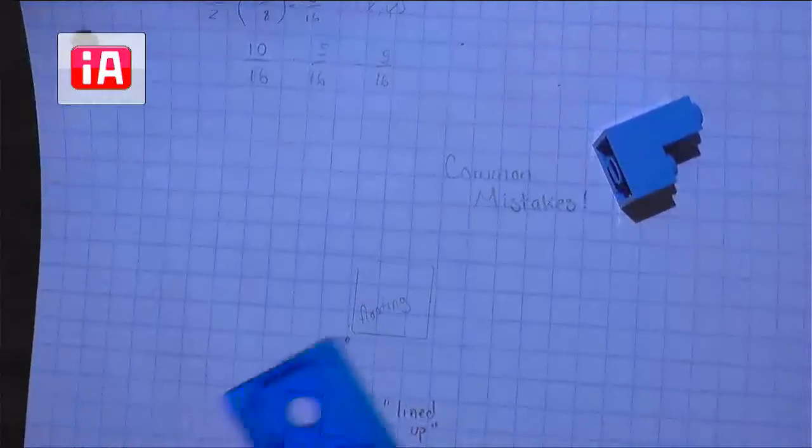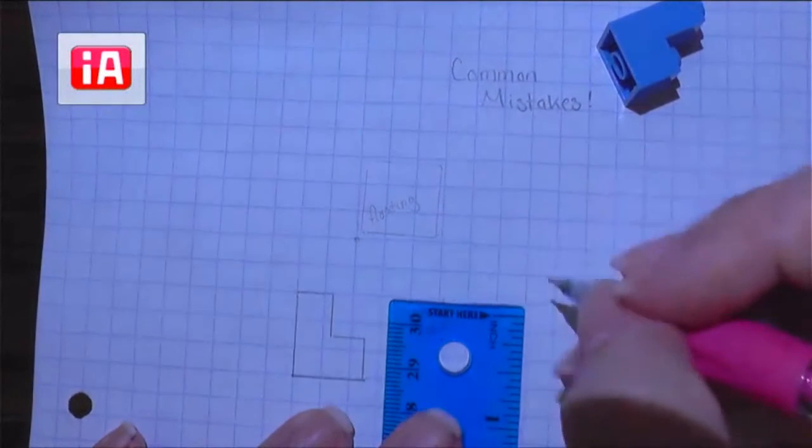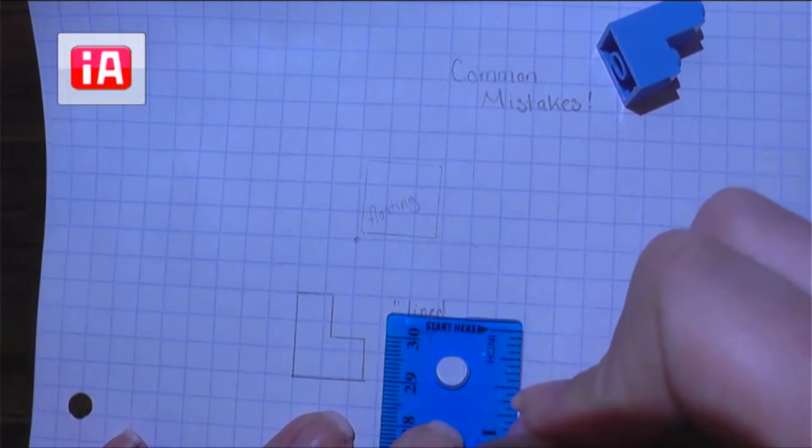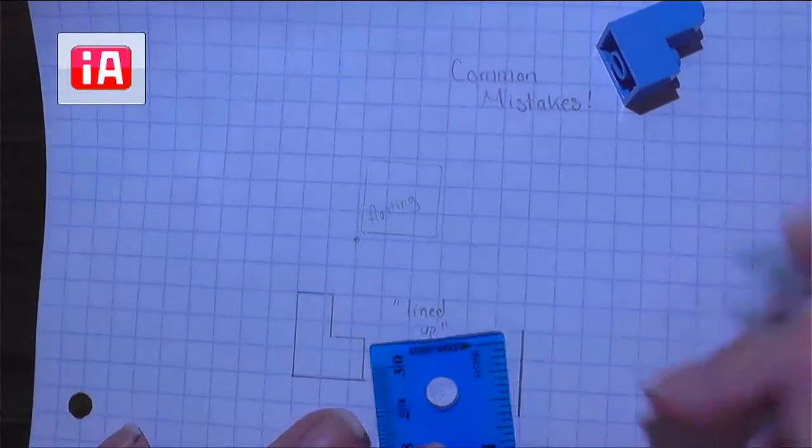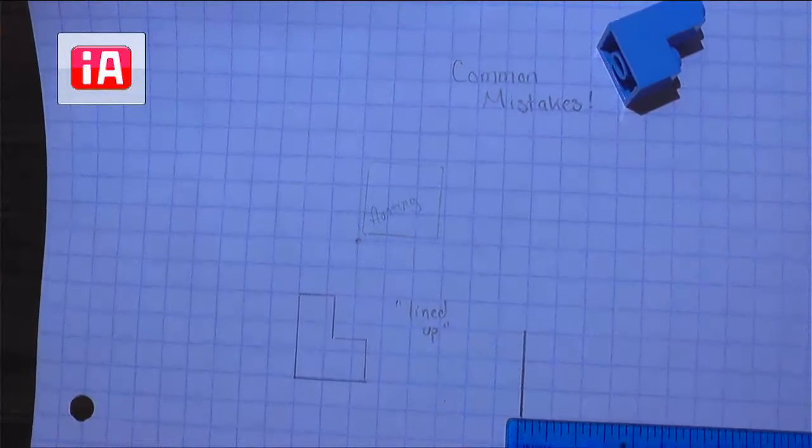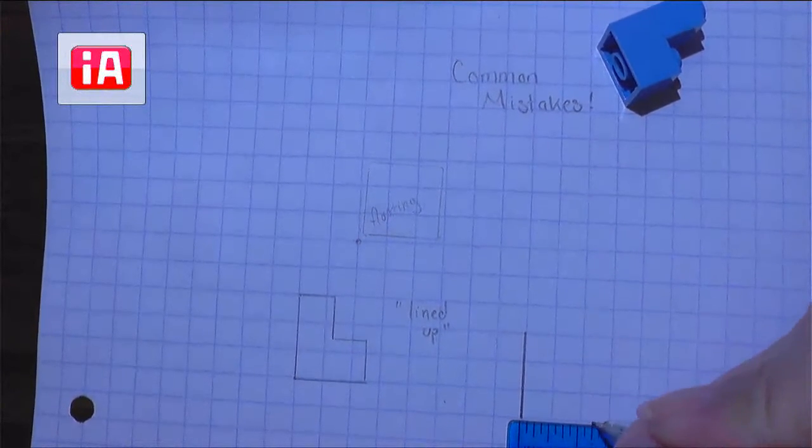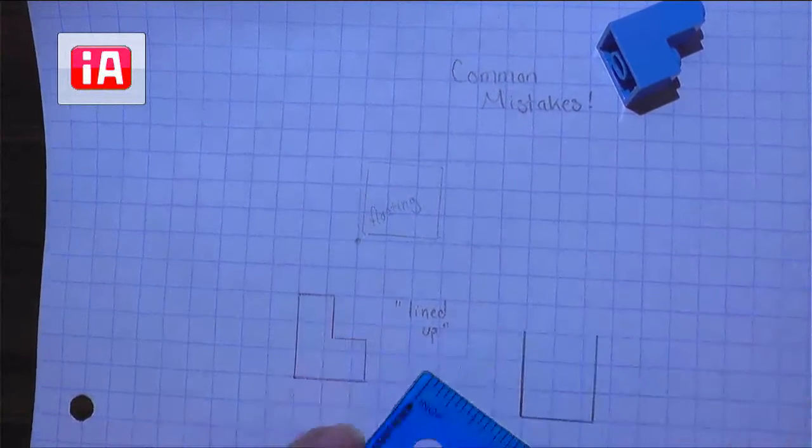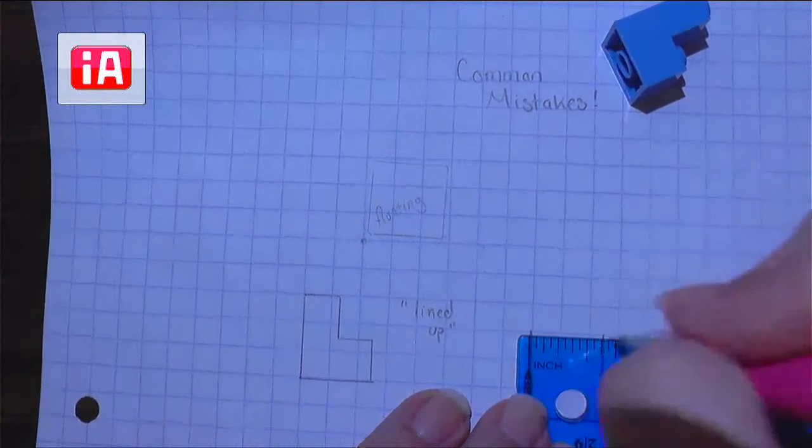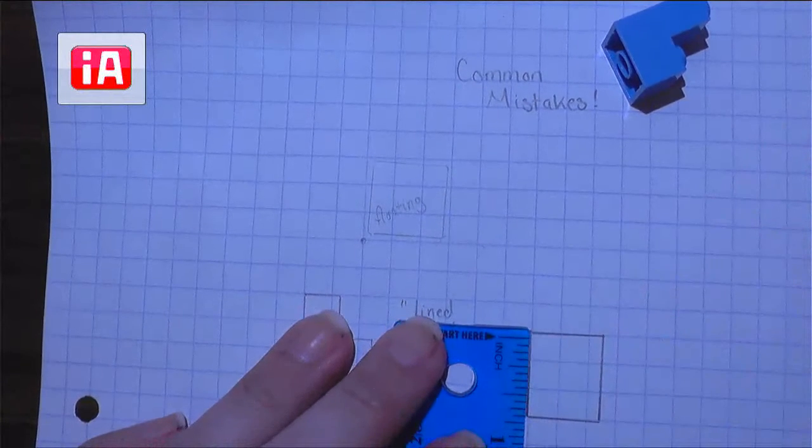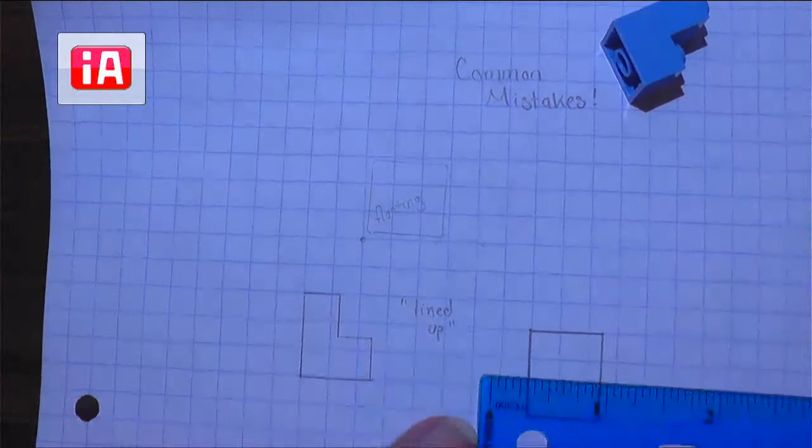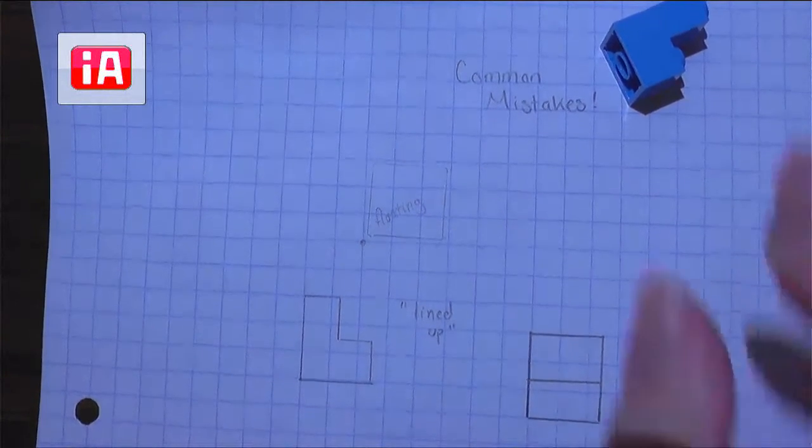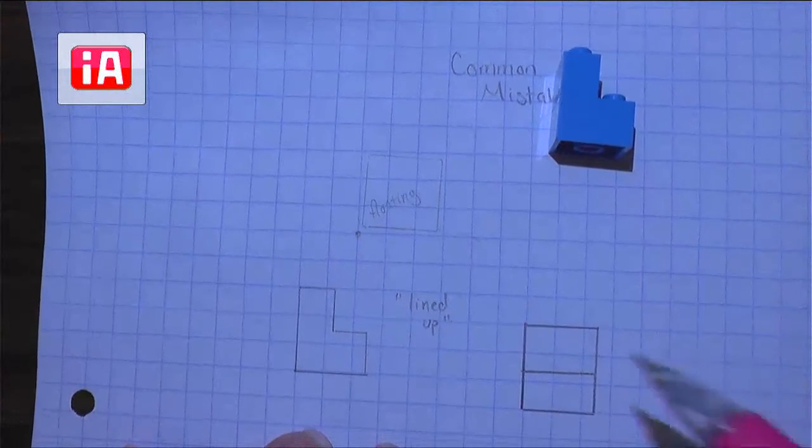If your drawings aren't lined up, what we'll typically see instead, you might have the correct measurements, but they're not on the correct lines of the graph paper. So this rectangle that I'm drawing right here is a correctly drawn side view for this Lego tower, but it's not correctly lined up.